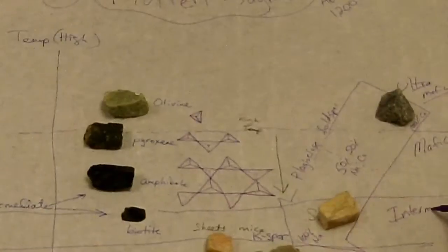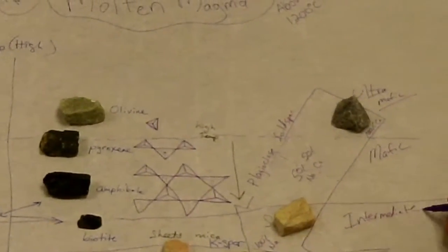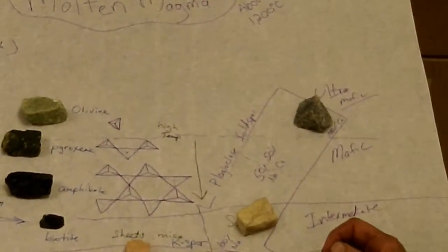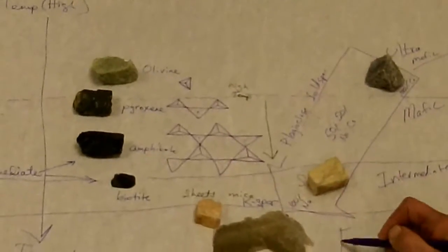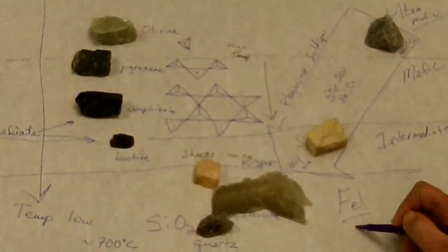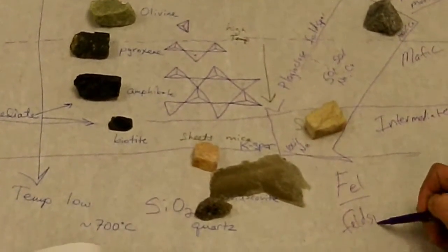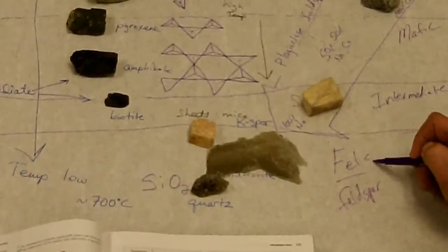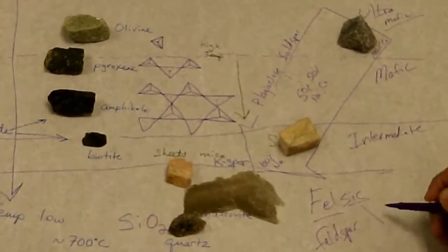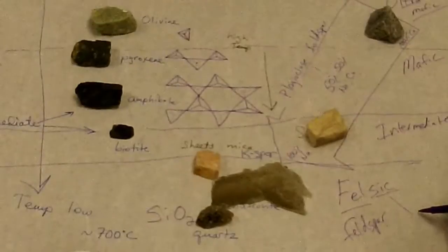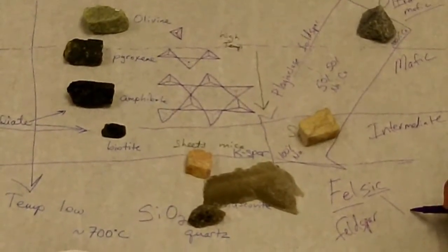And then below that, what do we have? Okay. And now we're down to felsic. So these guys down here, the F-E-L stands for feldspar, and the S-I-C is for the silica, like the silicon dioxide. Yep, the quartz. Okay.